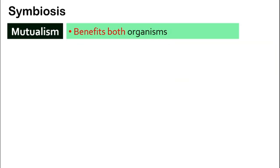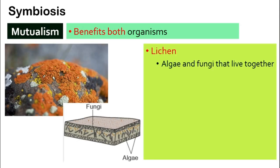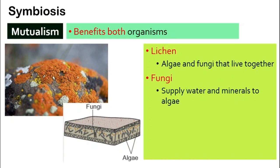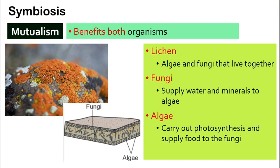Another example of mutualism is lichen. What is lichen? The picture here shows fungi and algae living together. Fungi will supply water and minerals to algae, and algae — being a plant that carries out photosynthesis — will supply food to fungi. So they both help each other, live together, and are both very happy. This interaction is mutualism.